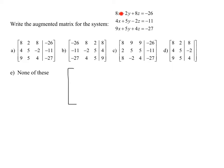Row 1: 8, 2, 8. Those are my coefficients. I'm going to have a vertical line for the equals, and then I'm going to put my negative 26 on the other side. That's my constant for the first row.